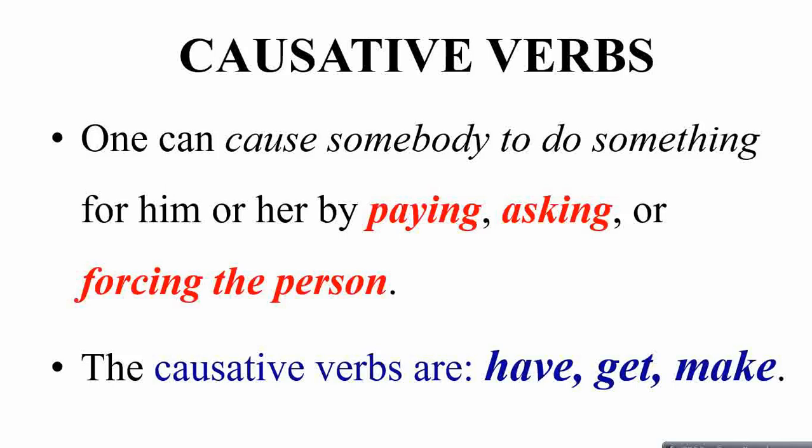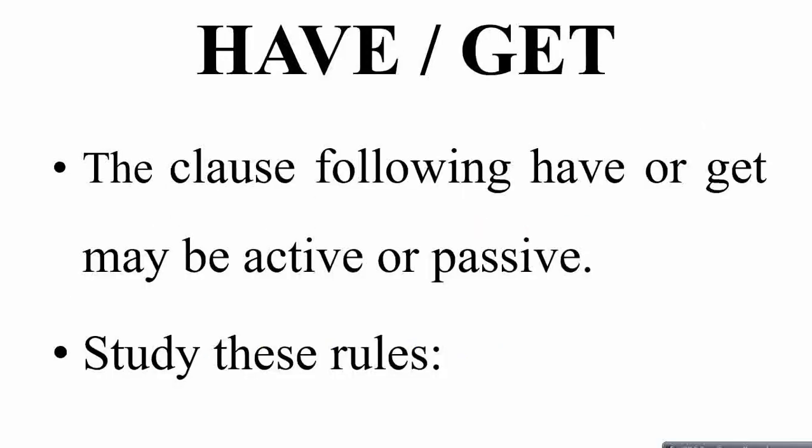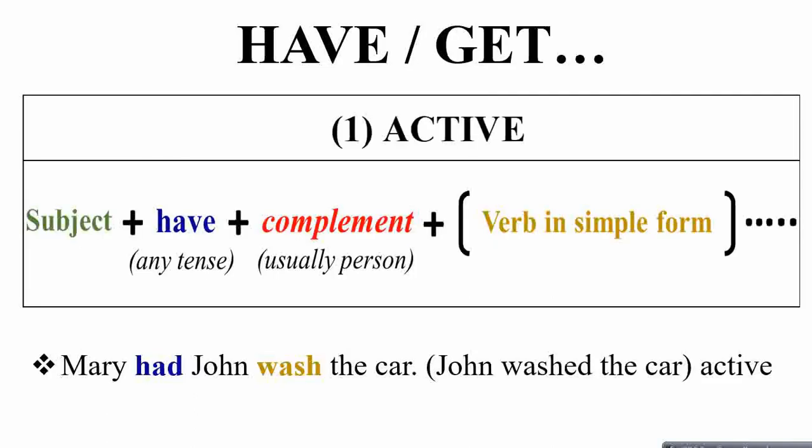Now we will do an in-depth study, starting with 'have' and 'get'. The clause following 'have' or 'get' may be active or passive. So you have different sentence structures for 'have' and 'get'. Let's start looking at those rules.